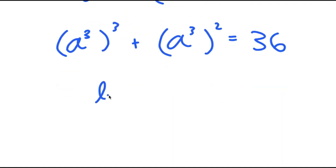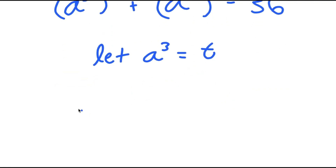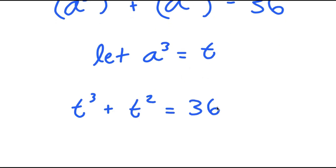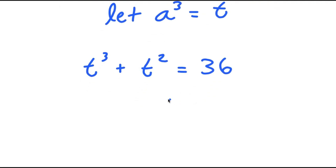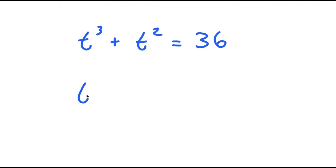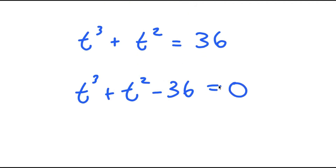Now, I'm going to let a to the power of 3 equal to the variable t. So if I substitute in t, I get t to the power of 3 plus t squared is equal to 36. And this means that t to the power of 3 plus t squared minus 36 is equal to 0.